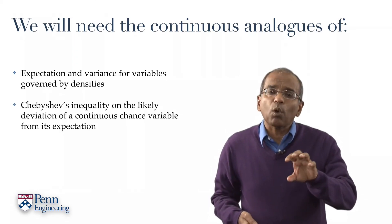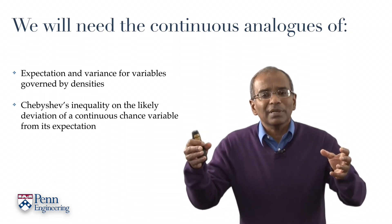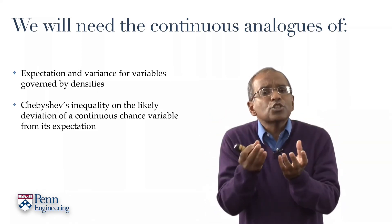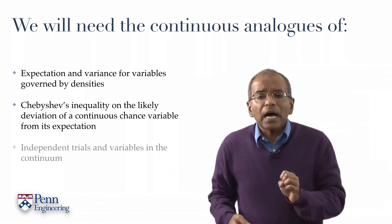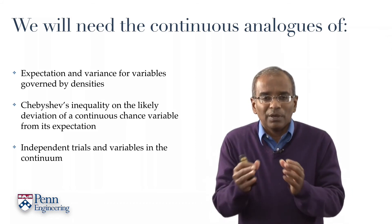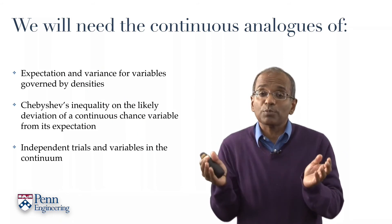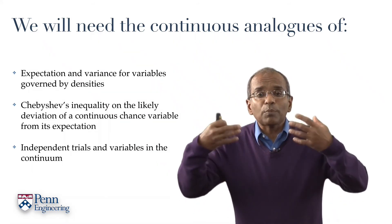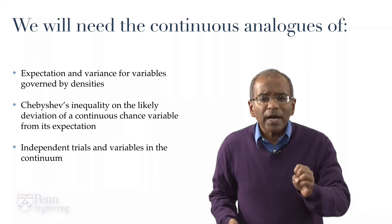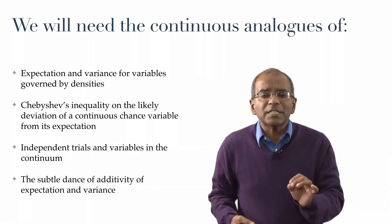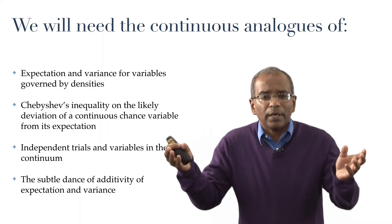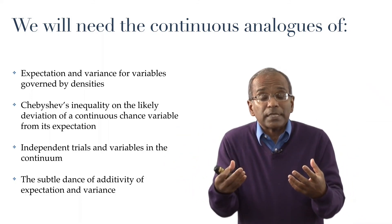The form that Chebyshev's inequality takes in the continuum — and you will recall that this captures the likely deviation of a continuous chance variable from its expectation. The idea of independent trials and independent chance variables in the continuum: we recall that independence is a rule of products. When you move to the continuum, this rule of products is manifested in the context of densities. And, finally, this subtle principle of additivity, which is an abiding principle forming a skein or thread running right through the theory — we will want to see how additivity is manifested in the continuum.